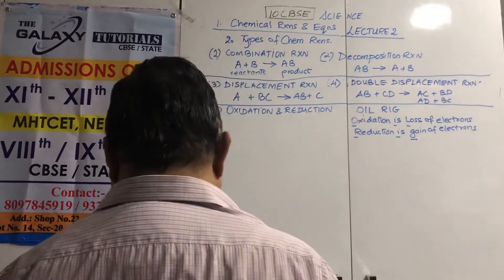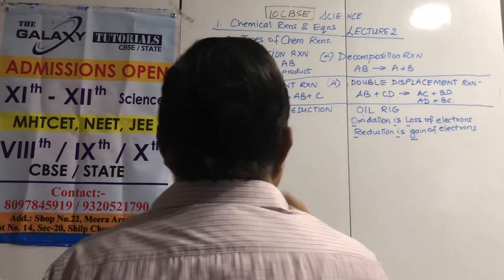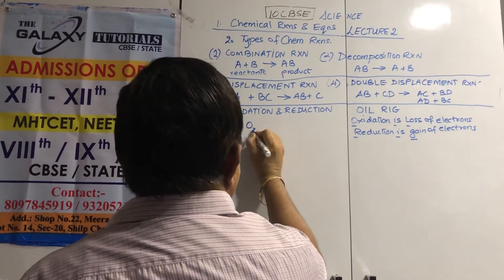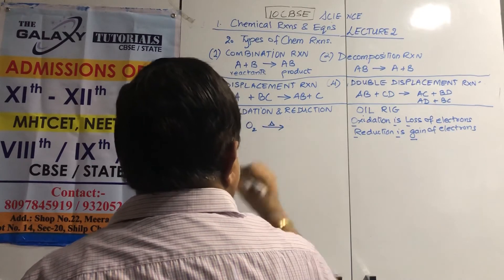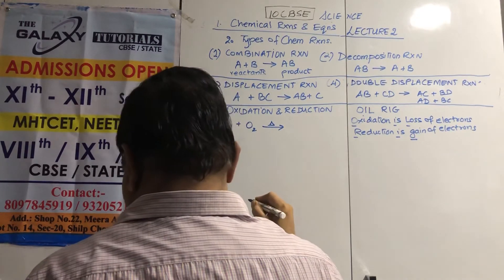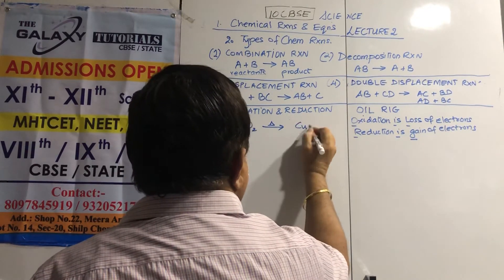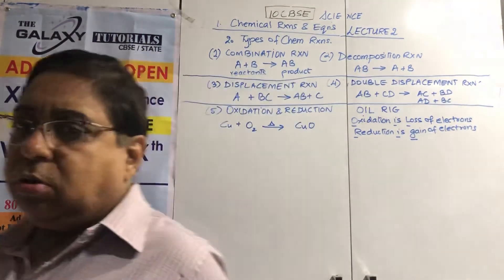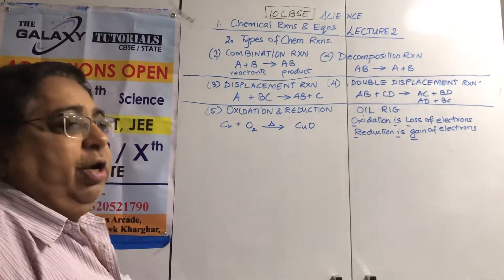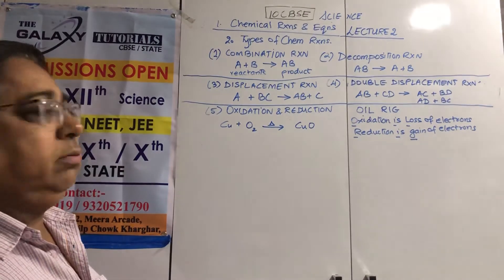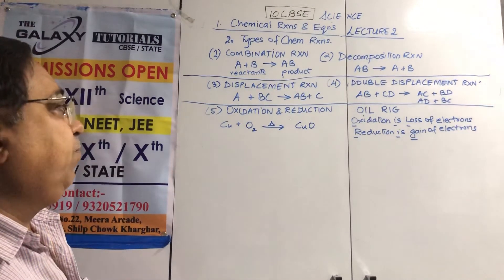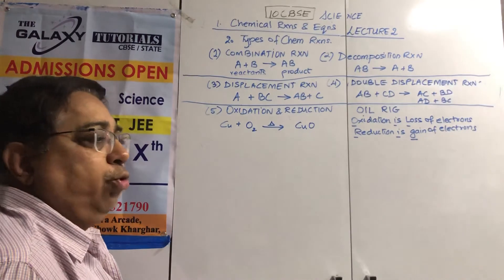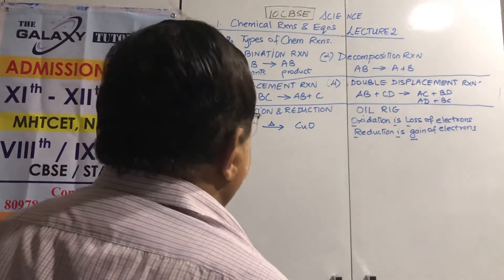First: copper plus oxygen, when heated, gives copper oxide, which is black in color forming a coat outside. You can see the Statue of Liberty has turned green because it is slowly being oxidized in the air — the Statue of Liberty is made of copper.